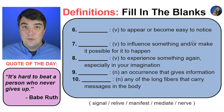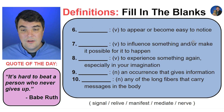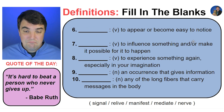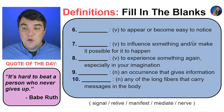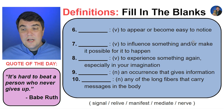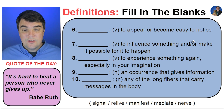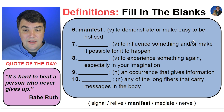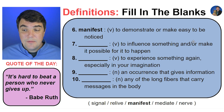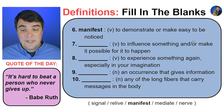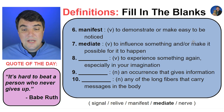Very good job. Round two. Verb: to appear or become easy to notice. Manifest. Verb: to influence something and/or make it possible for it to happen. Mediate.